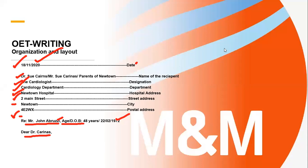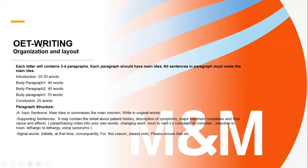Now moving to organization: in the general understanding of organization, the introduction part should be around 25 to 30 words. Your information must be concise and summarized. The introduction part should be 25 to 30 words — it means your information must be concise and summarized.